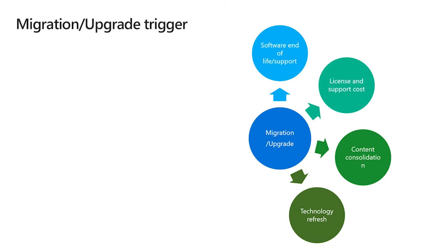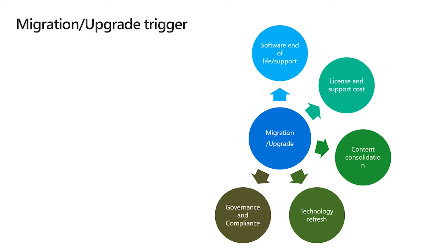Content consolidation is another trigger — not just with SharePoint, but if you have many systems, it's an opportunity to bring everything together. Technology refresh is another reason: users of older platforms often say the UI is clunky and they can't do things easily. They need something fresh, intuitive, and modern. Although the platform might be solid, it's ultimately the users who use it, so having the right technology refresh helps.